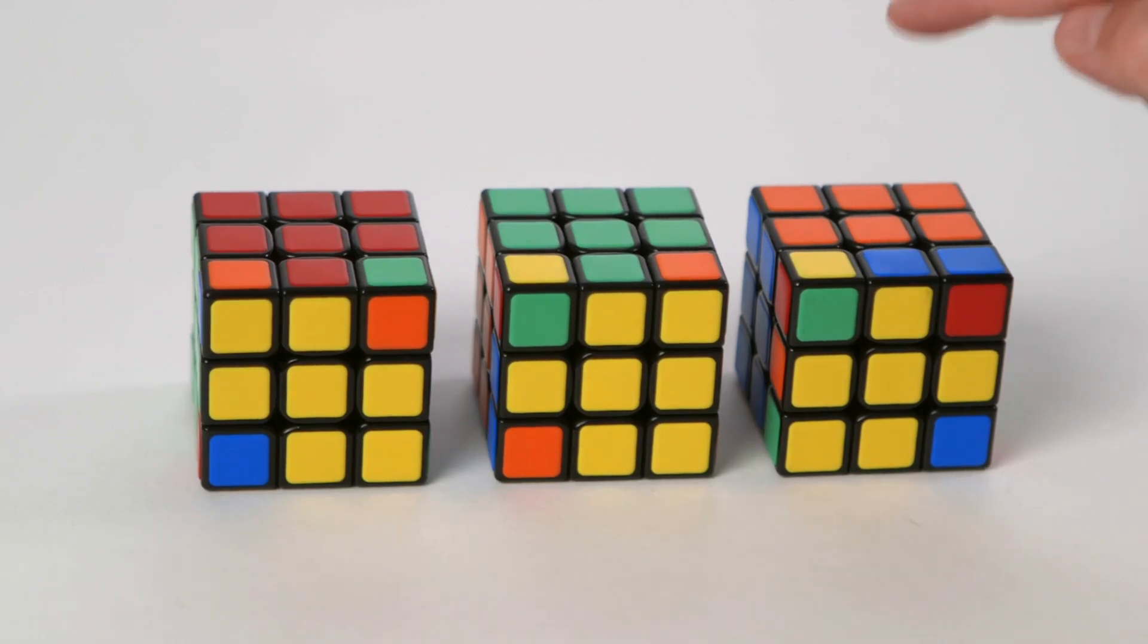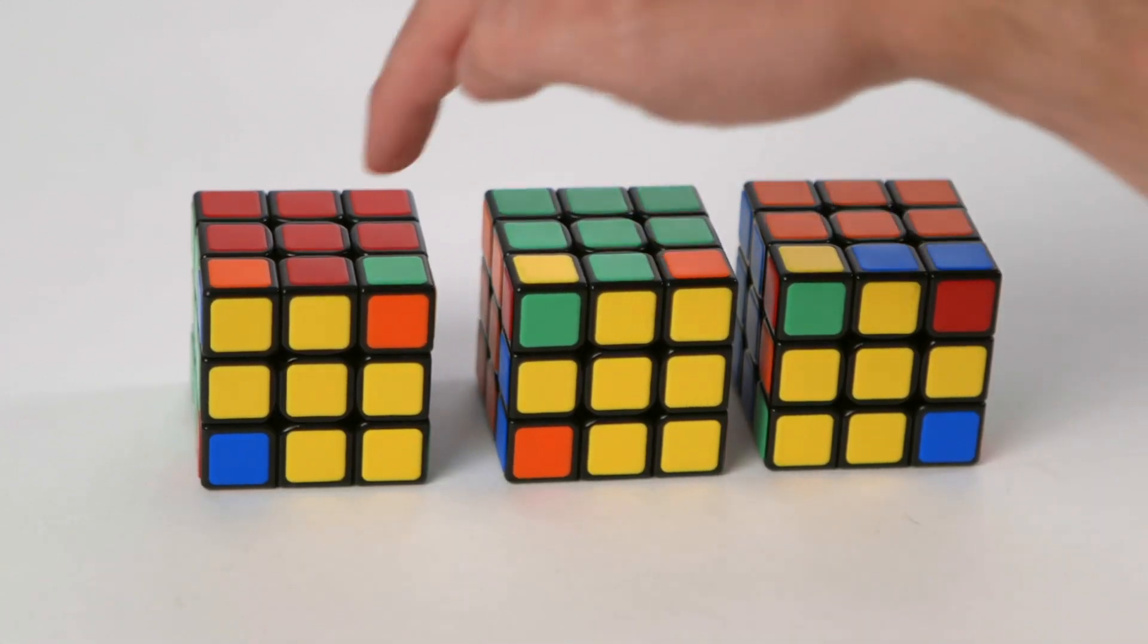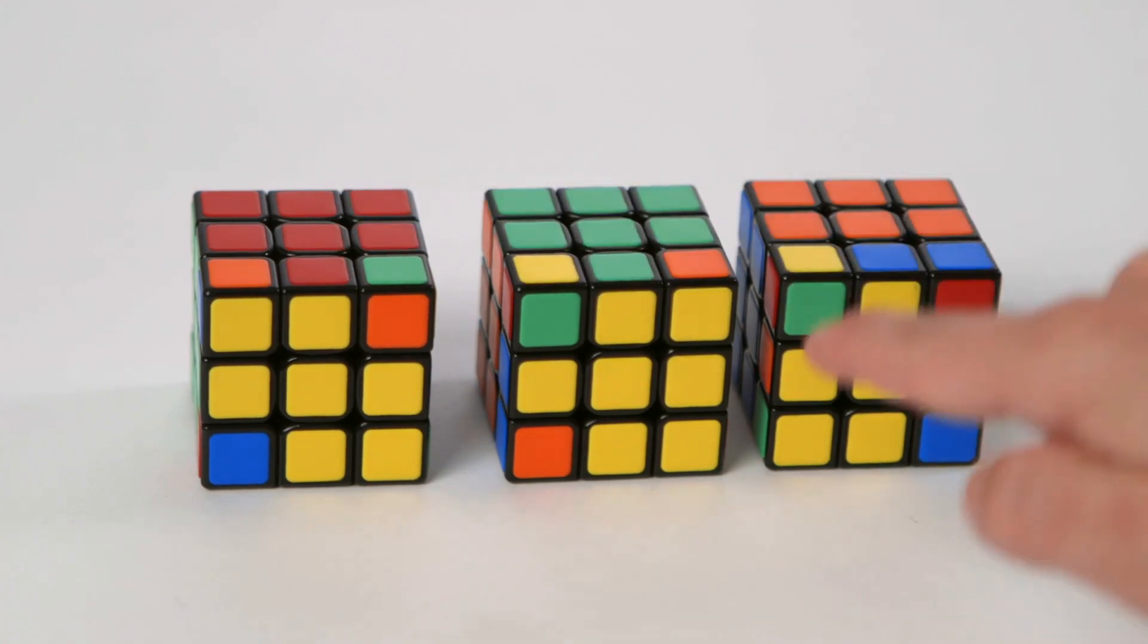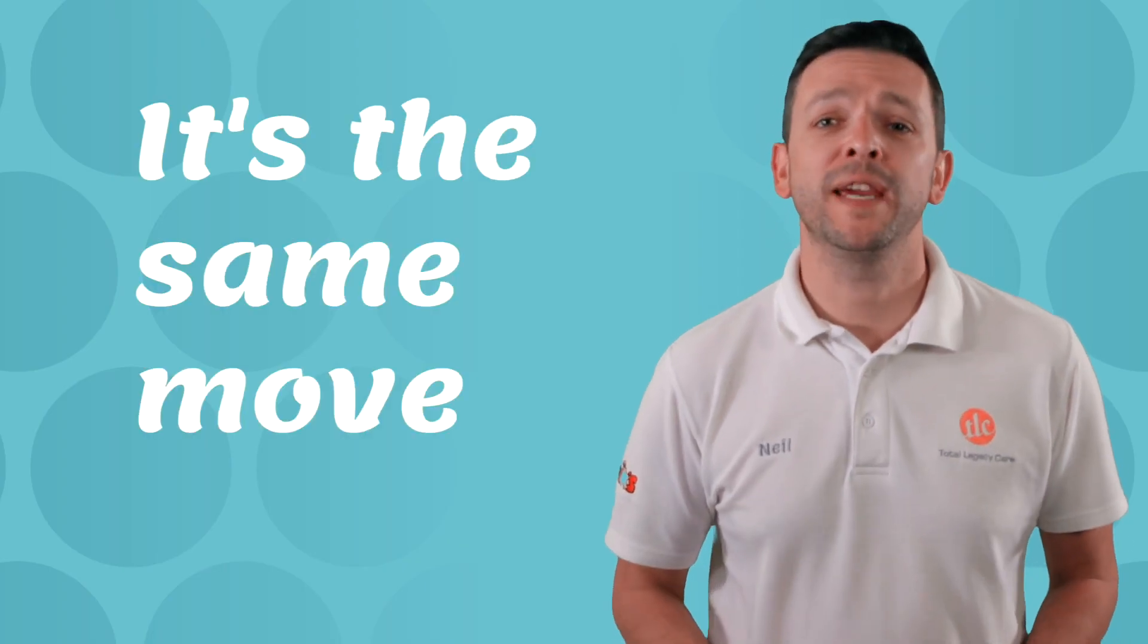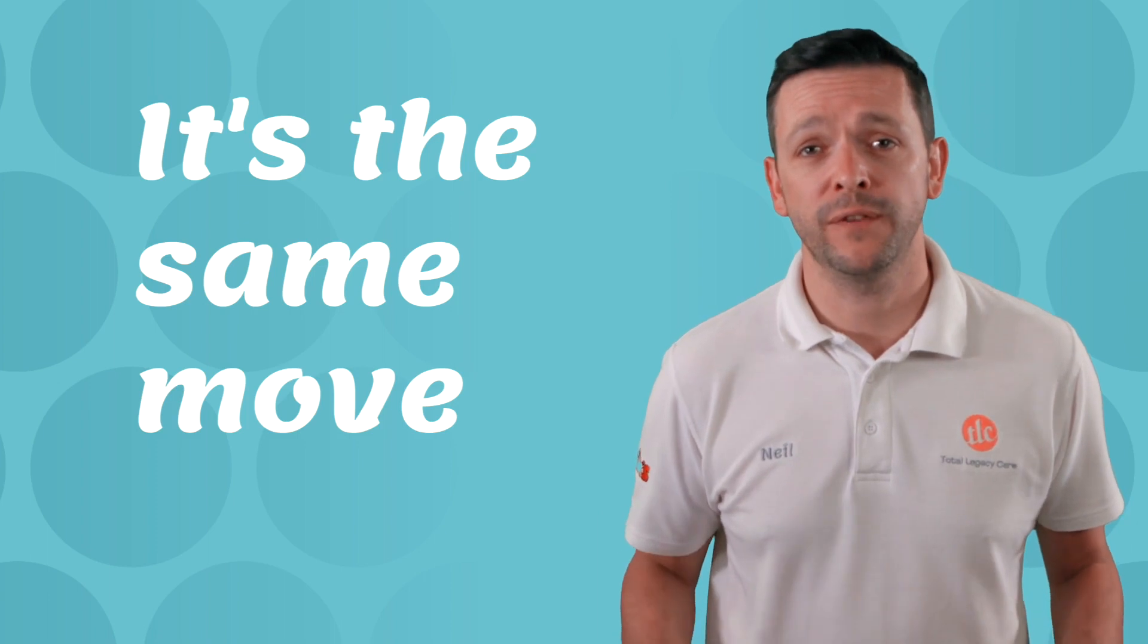Now you may have ended up with the fish, the tank or the bow tie. As long as you position them in the correct position and do that same algorithm, eventually you'll end up with the fish. It's the same move each time, and eventually you'll get to the fish.